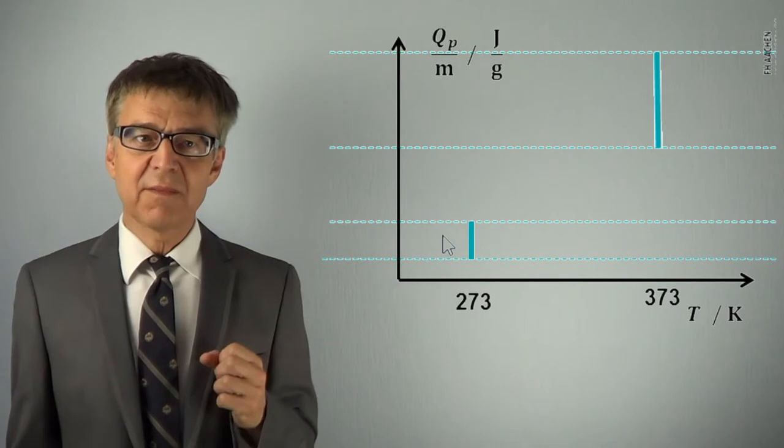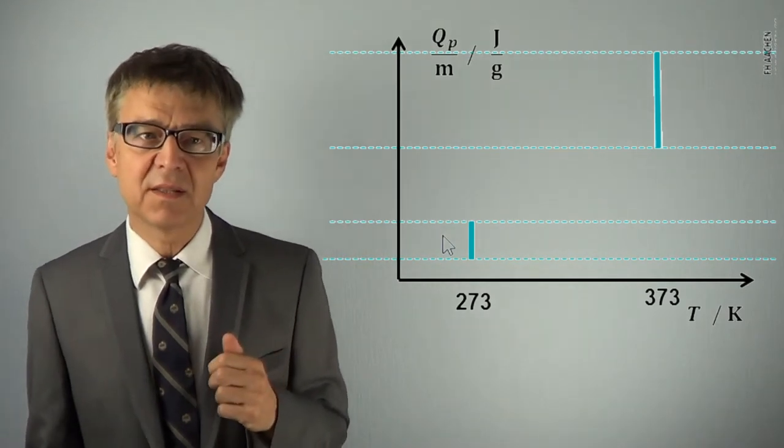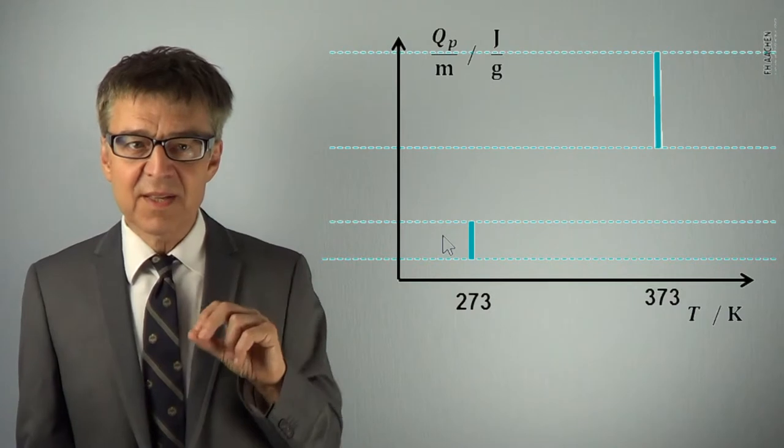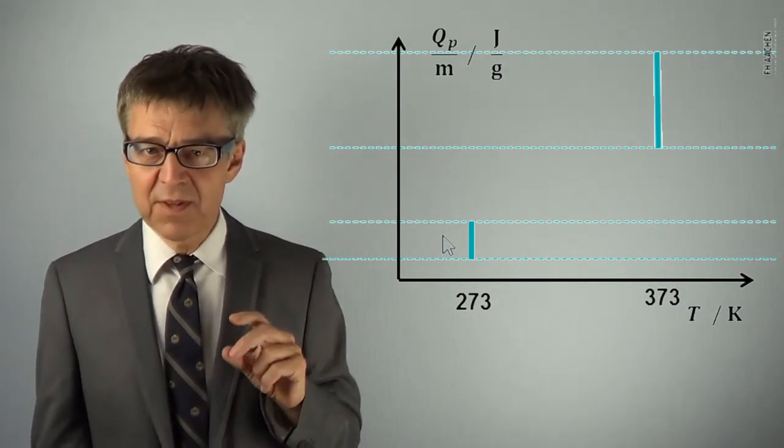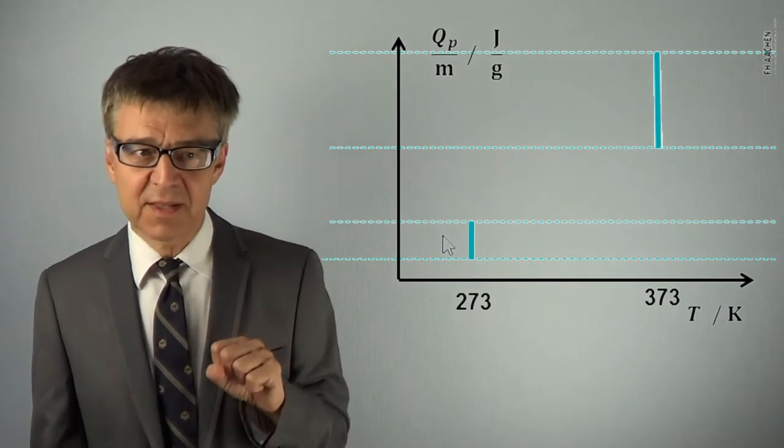At 273 and 373K heat does not cause a change in temperature. This is what we call latent heat.